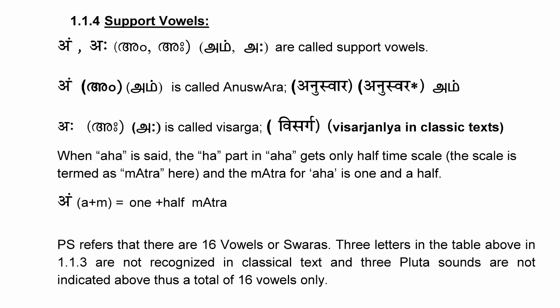With anuswara and visarjaniya included, there are a total of 16 letters in the standard Sanskrit vowels. There will also be differences when we compare with Pratishakhya, which we'll see later. We have now seen the basic 16 vowels in Sanskrit. Let us continue with the rest in the next video.